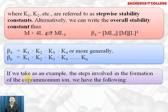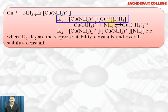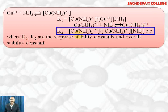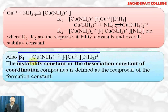Taking the example of the cupramine complex: copper ions react with one mole of ammonia to form [Cu(NH₃)]²⁺, and k₁ = [Cu(NH₃)²⁺] / [Cu²⁺][NH₃]. A second ammonia molecule joins to form [Cu(NH₃)₂]²⁺ with stepwise constant k₂. Two more steps give k₃ and k₄ in the same manner. The overall stability constant beta₄ = [Cu(NH₃)₄²⁺] / [Cu²⁺][NH₃]⁴.